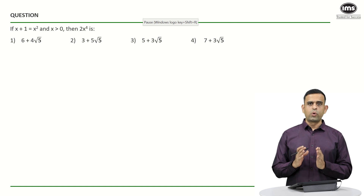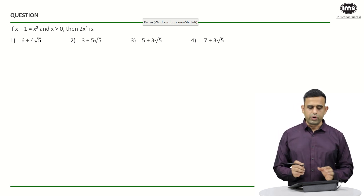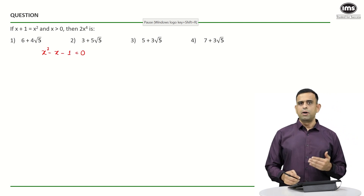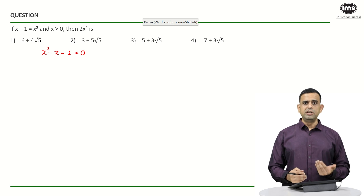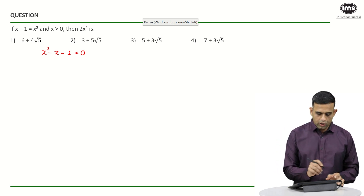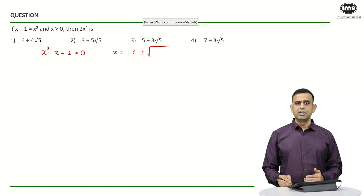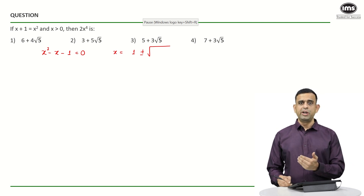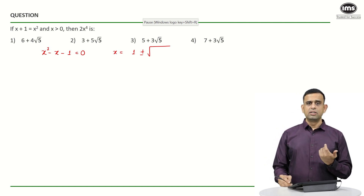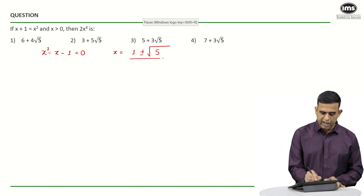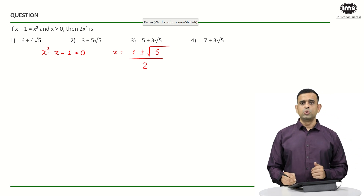First of all, let us try to find out the value of x from the equation, which is a quadratic one. One can rewrite it as x squared minus x minus 1 equals 0, and then using the quadratic formula, minus b plus minus root of b squared minus 4ac divided by 2a, one will get x equals 1 plus minus root 5 divided by 2.